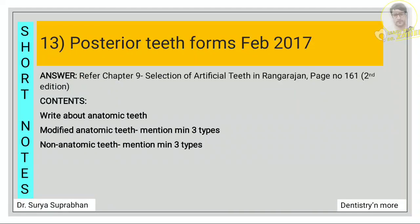For posterior teeth form, it can be anatomic, non-anatomic, or modified anatomic. Many examples are given in the textbook for modified anatomic and non-anatomic teeth — write a minimum of three types for each.